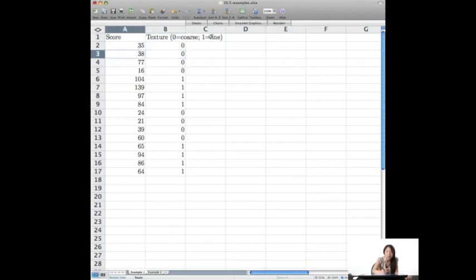Let's go up to fine. So they tasted fine texture, and they gave it that score. They also tasted fine, and they gave it that score. So you could go and see what the different scores are and what texture that they had.